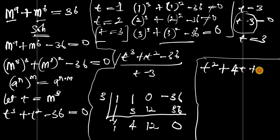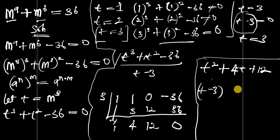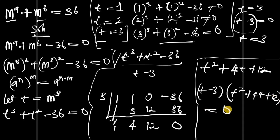That means we're going to have t power 2 plus 4t plus 12 as the other factor. So we have two factors: t minus 3 (from the known solution) and t power 2 plus 4t plus 12, and this product equals zero. If we solve these two equations, we're going to have all the solutions.